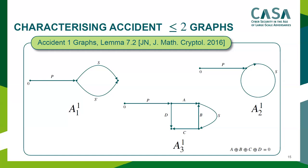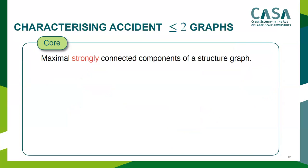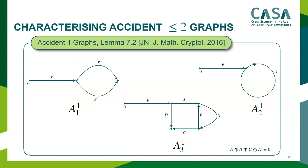In the 2016 paper we characterized all one-accident graphs — there are three possible graphs, but with the restriction that messages must be of equal length, only graph A11 is possible since the other two require one message to be longer. This solves the one-accident case but not the two-accident case. The technique used there was quite ad hoc and involved tedious case-by-case analysis, so it is not applicable for two accidents.